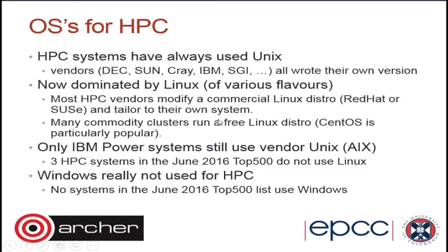For high performance computing, we used to be entirely a Unix shop, but now pretty much everything runs some version of Linux — primarily command-line versions. The Top500 list of the fastest 500 systems in the world has all but three running Linux; the remaining three run a version of Unix called AIX. None of them run Windows.